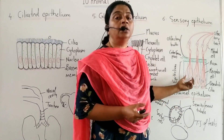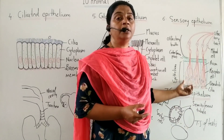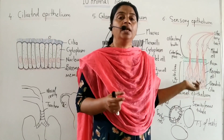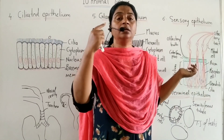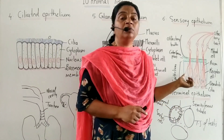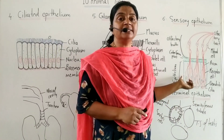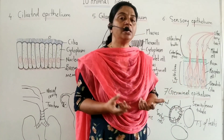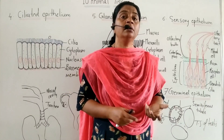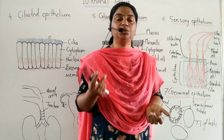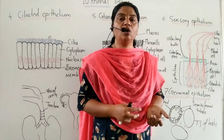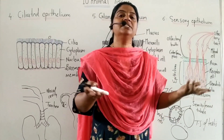Sensory epithelium is located in the eyes, in the olfactory epithelium — meaning present in the nose — in the ear, and on the retina of the eye. The function of sensory epithelium in the nasal epithelium is sensation of smell. The function in the ear is hearing. The function on the retina of the eye is sight.